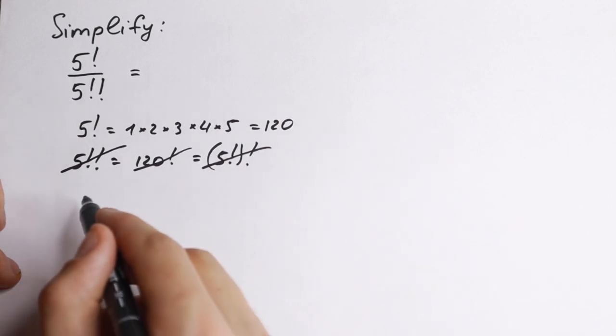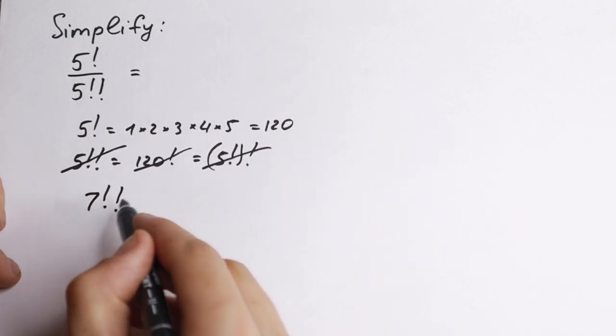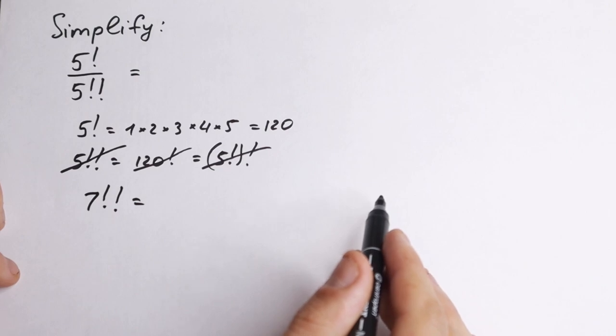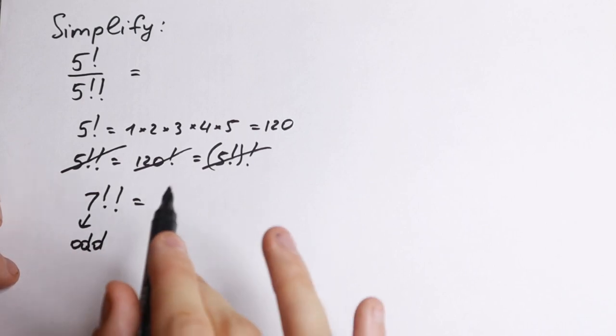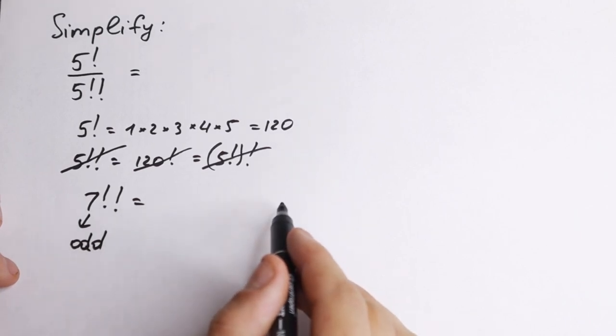So for example, we have 7 with double factorial. And what is the rule with this double factorial? We need to go to this 7 only with the parity of this number 7. So this 7 is odd number. So at first we need to mention what is this number. So 7 is odd number.